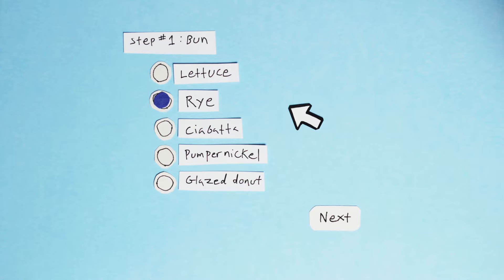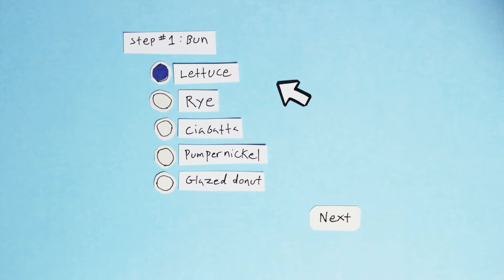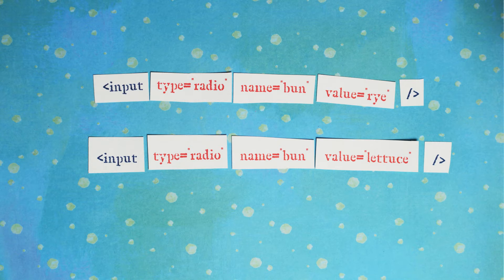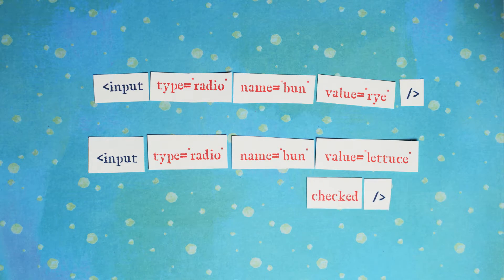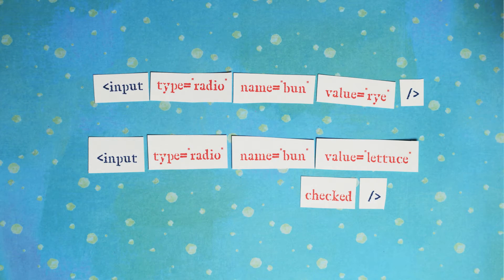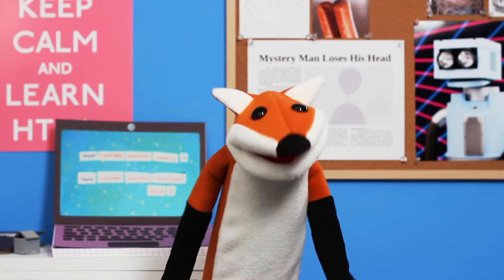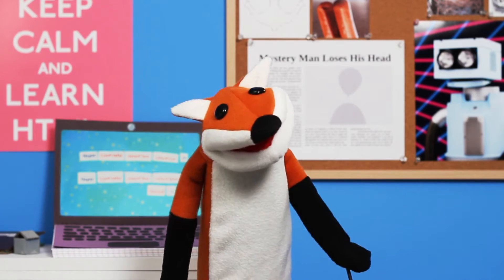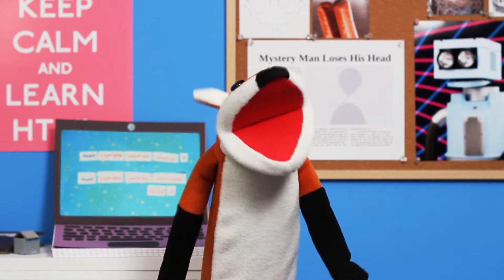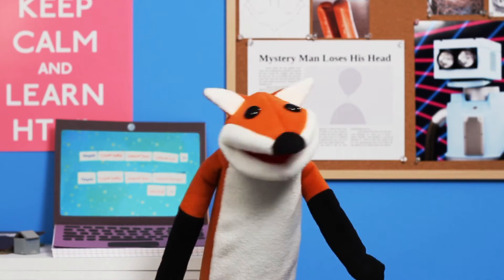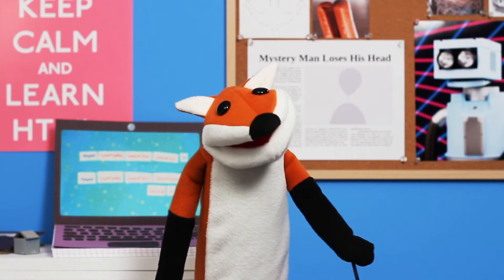I'm going to have a lettuce bun, so I'll check that option. When a radio button is checked, it gains another attribute called 'checked'. That's what's known as a boolean attribute — it doesn't need to have a value associated with it.